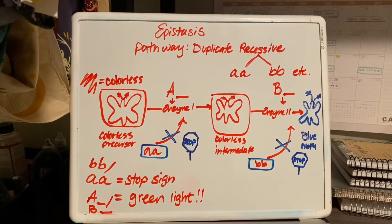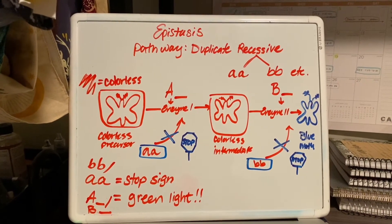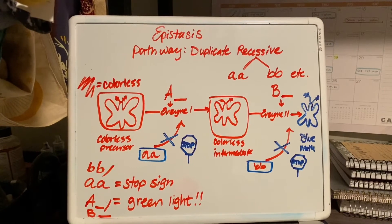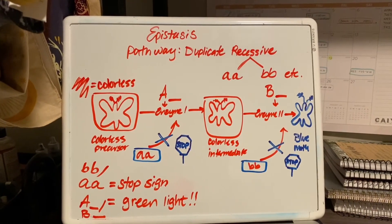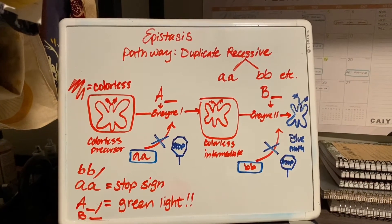Now this process repeats itself with big B little b or big B big B, which will activate the second enzyme to give the color.